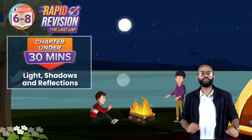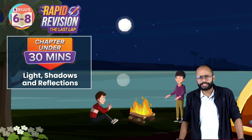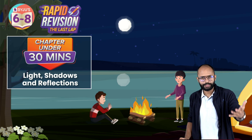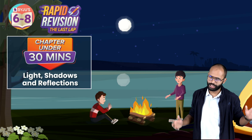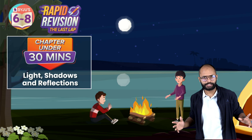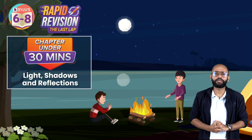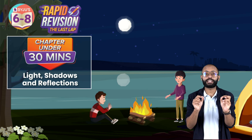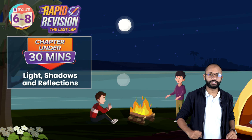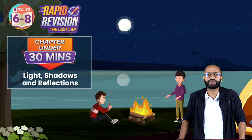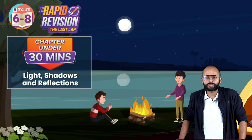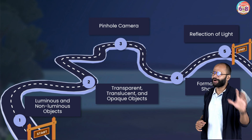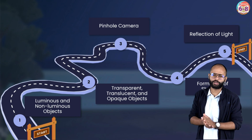Third, homework questions. During this session, I'll give you a few homework questions and I'm expecting you to let me know the answers in the comment section. Shall we begin? The series is called Rapid Revision the Last Lap - under 30 minutes. The chapter's name again is Light, Shadows and Reflection. We have broken this chapter down into five simple topics.